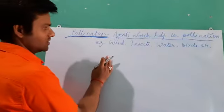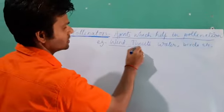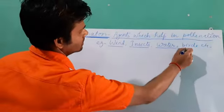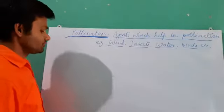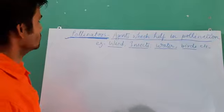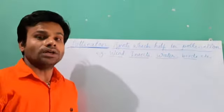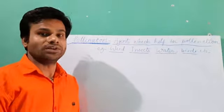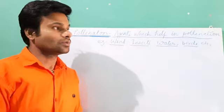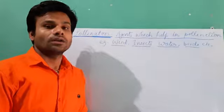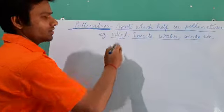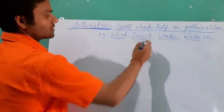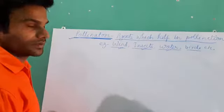There are some pollinators like wind, insects, water, bats, as well as other animals. Now we will look at the adaptations found in wind pollinated flowers, insect pollinated flowers, as well as water pollinated flowers.